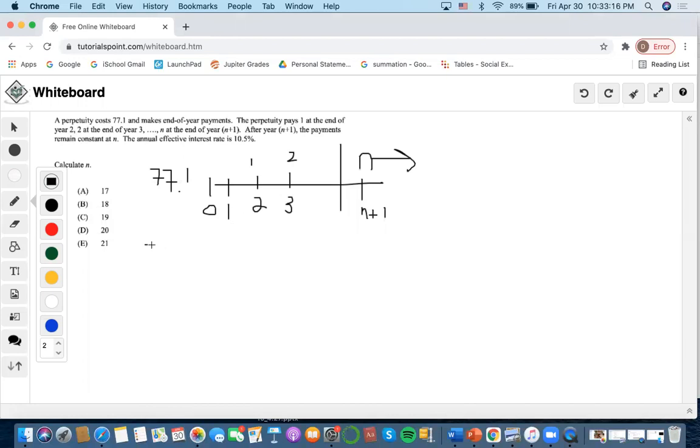So we're going to do 77.1 equals the level annuity discounted back by V.